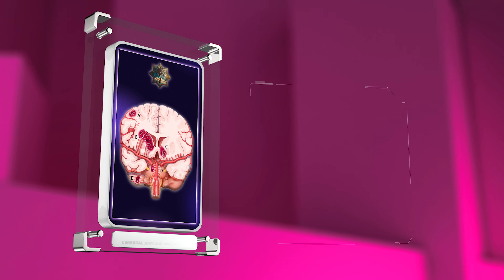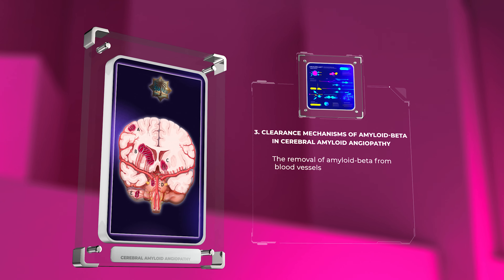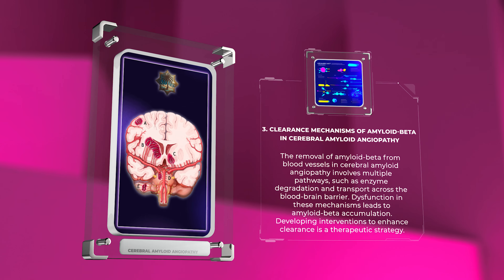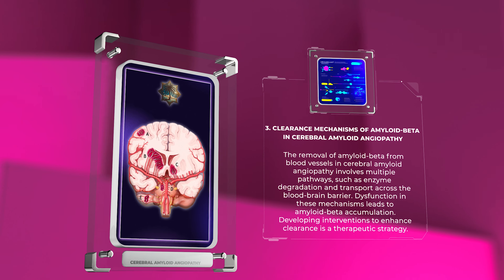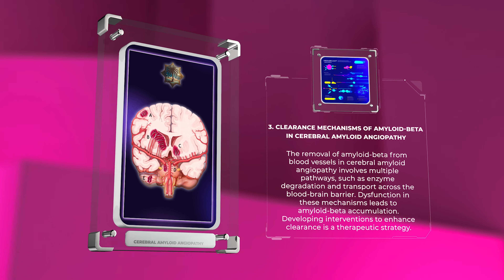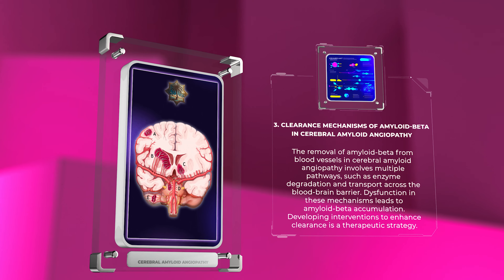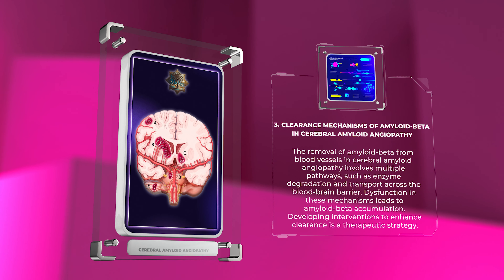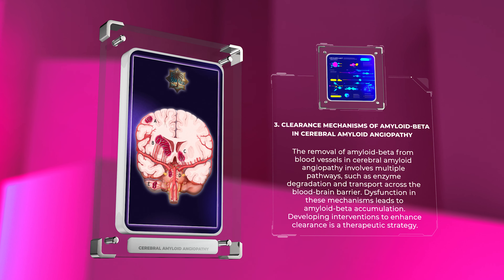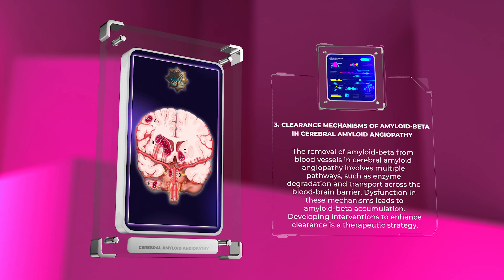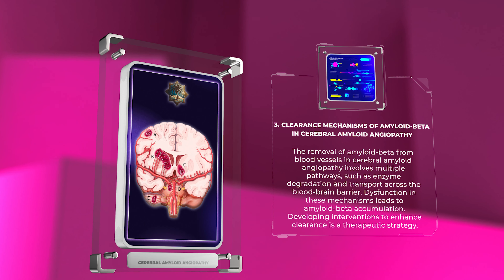The removal of amyloid beta from blood vessels in cerebral amyloid angiopathy involves multiple pathways, such as enzyme degradation and transport across the blood-brain barrier. Dysfunction in these mechanisms leads to amyloid beta accumulation. Developing interventions to enhance clearance is a therapeutic strategy.